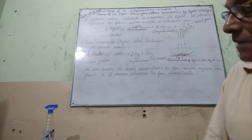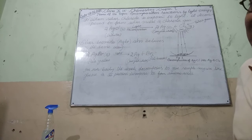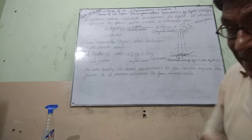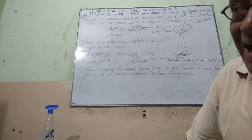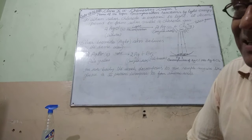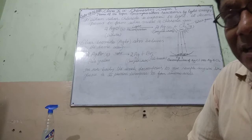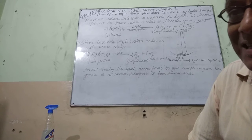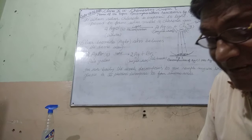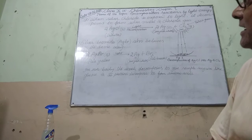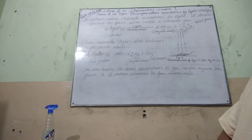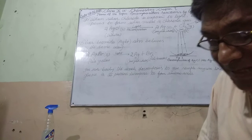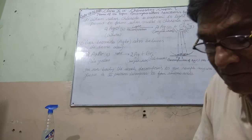Now we have to discuss about decomposition reactions caused by light energy. We already know that decomposition reactions take place by applying heat energy, electrical energy, and light energy. Now we have to discuss about decomposition reactions which take place by light energy — which may be sunlight or bulb light.